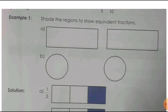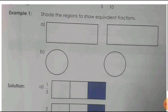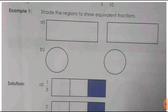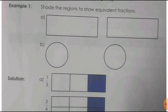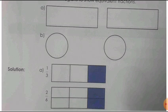Now some textual questions. Example: shade the regions to show equivalent fractions. Here two rectangles and two circles are given. You have to shade to get equivalent fractions. In the first rectangle, we can divide it into 3 and then shade one part — so it is 1 by 3 or 1 upon 3. And the second one, you can divide up to 6 and then shade two parts. Both are showing the same part of the whole, so 1 by 3 and 2 by 6 are equivalent.